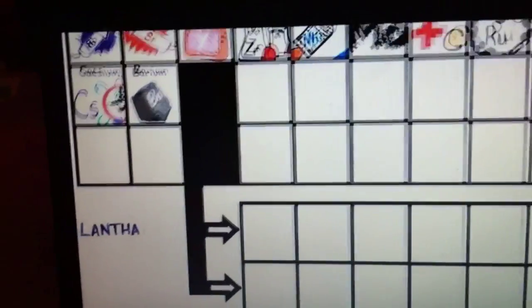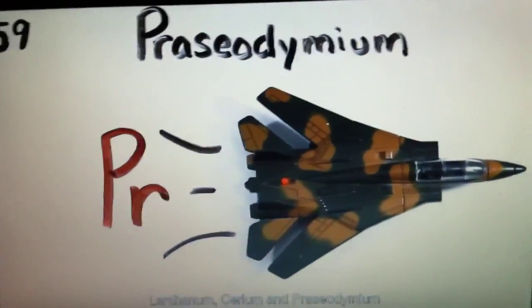Barium is fifty-six, and this is where the table splits, where lanthanides have just begun. Lanthanum, cerium, and praseodymium.